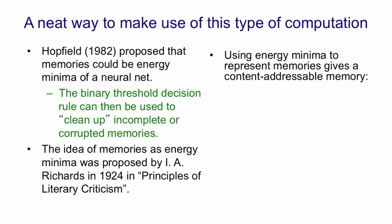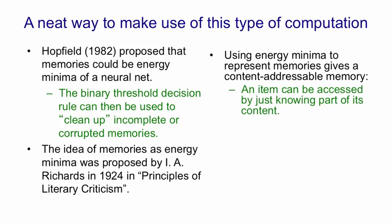Using energy minima to represent memories gives a content addressable memory, as Hopfield realized, so that you can access an item just by knowing part of its content. I can tell you a few properties of something. That'll set the states of some of the neurons in the net, and if you've put the other neurons in random states and now go around applying the binary threshold rule, with a bit of luck, you'll fill out that memory to be some stored item that you know about. When Hopfield Nets were proposed in 1982, that was a very interesting property. 1982 was 16 years before Google. Now that we have Google, we regard this as perfectly obvious.